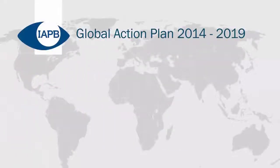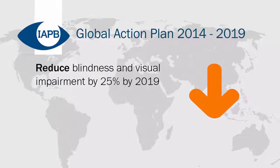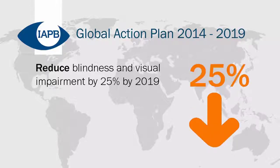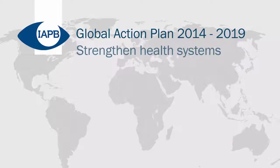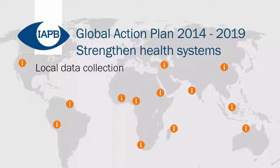To support the implementation of the universal eye health approach, IAPB has developed a global action plan. This aims to reduce the prevalence of avoidable blindness worldwide by 25% between 2010 and 2019, and this target will be achieved through strong and equitable health systems. To strengthen health systems, three key areas must be addressed. Local data is needed to identify needs and priorities, gaps and inequities at community level, done through rapid assessment surveys and local data collection.